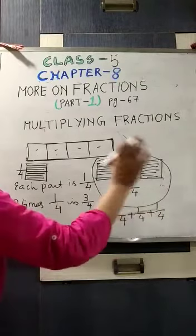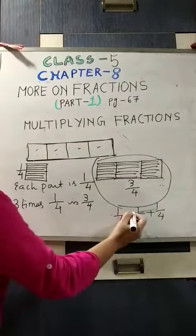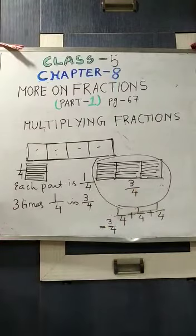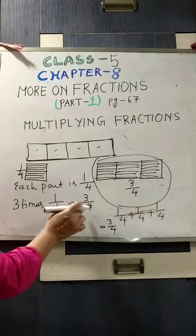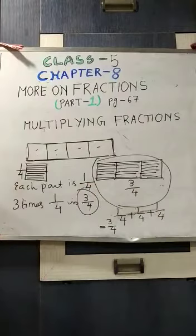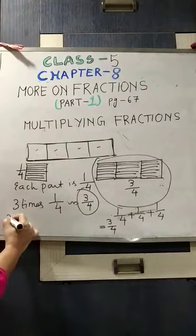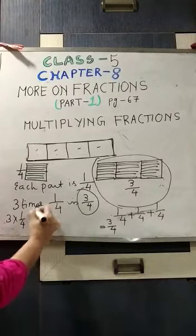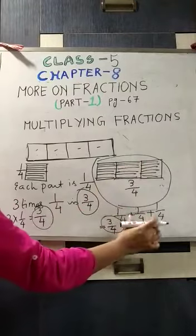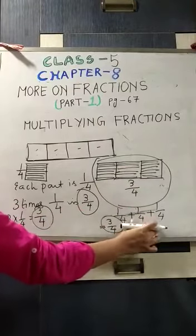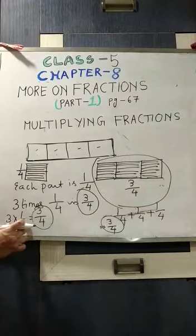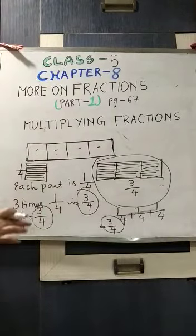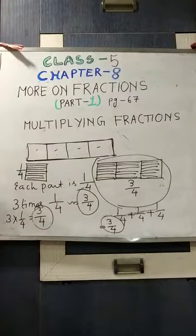As the denominators are same, we will add the numerators. So if we add these 3 numerators, it becomes 1 plus 1 plus 1 equals 3, so 3/4. Here also, it is 3 times of 1/4. That means 3 into 1/4 equals 3/4. This one I have done with the help of addition and this one with multiplication, but the result comes same. That is why multiplication is repeated addition.